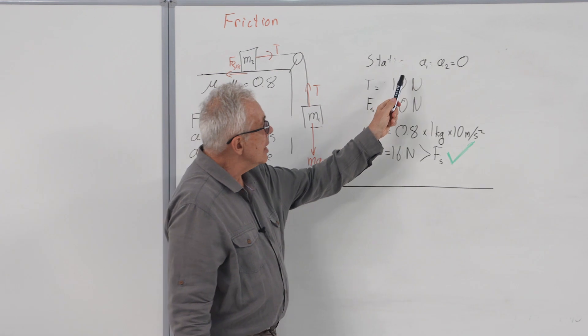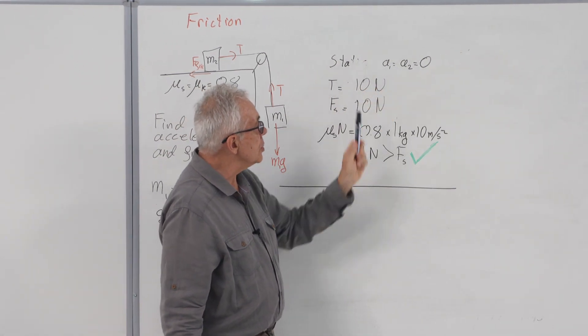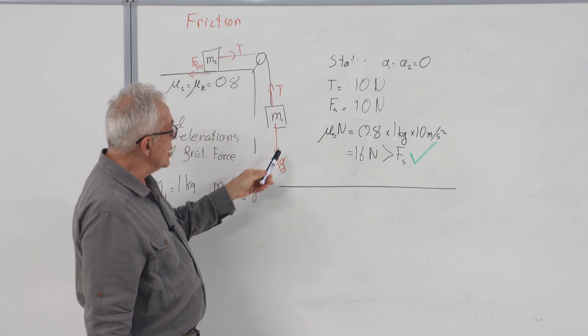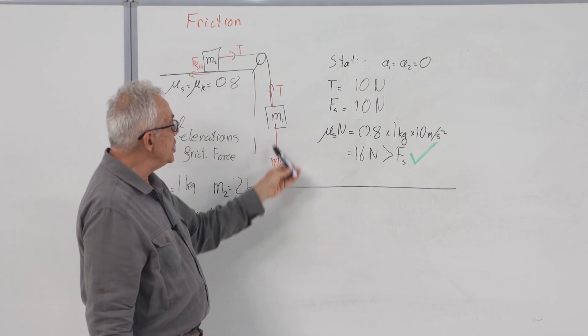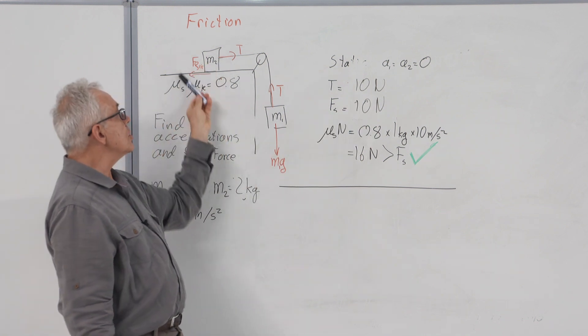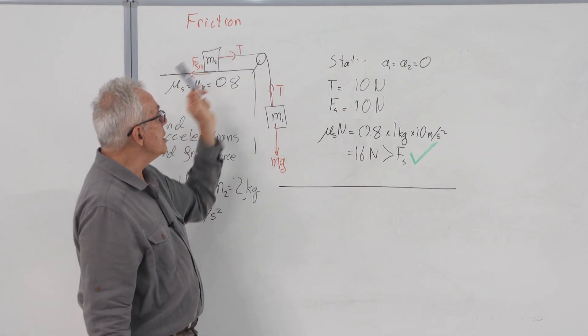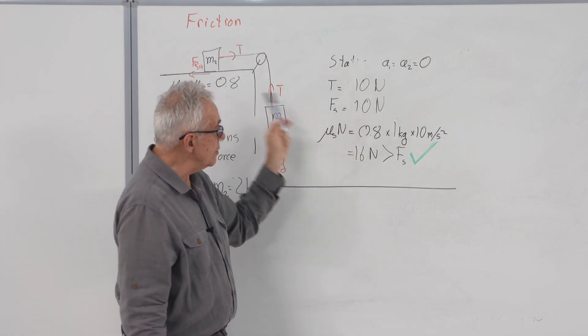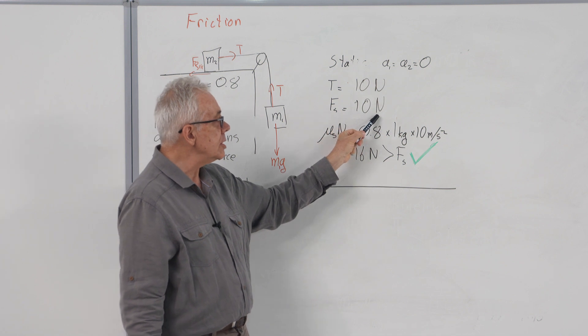So the situation is static. A1 equals A2 equals 0, then the net force on this thing is 0, downward m1g, upward t, so t is 10 newtons. Net force here is 0. To the right, t. To the left, f friction. Therefore, frictional force, which is static, is also 10 newtons.